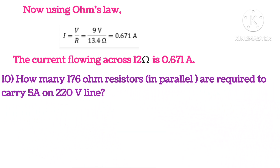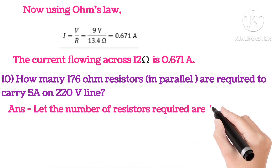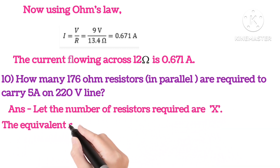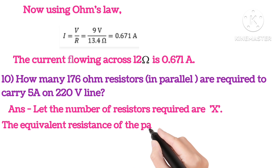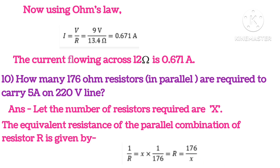Tenth: how many 176 ohm resistances in parallel are required to carry 5A on a 220V line? So let the number of resistors be X. Equivalent resistance of parallel combination R will be 176 upon X.